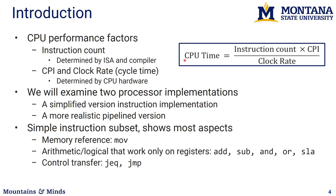CPU time will be governed by the number of instructions in your program — a factor of your compiler and instruction set architecture — as well as the number of cycles per instruction (CPI). Processors run on a clock, and the faster the clock is, the faster the processor. If clock rate increases but so does CPI, the processor isn't actually getting any faster.